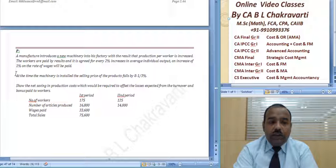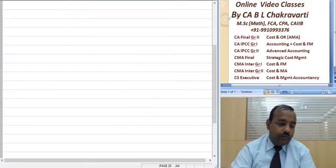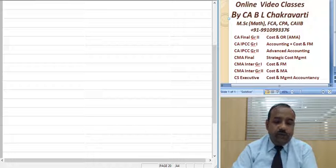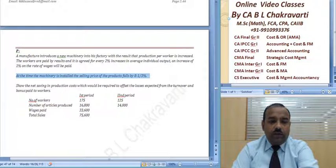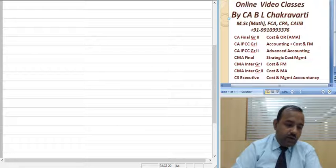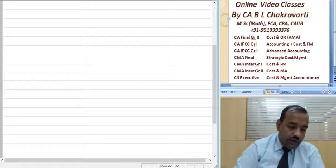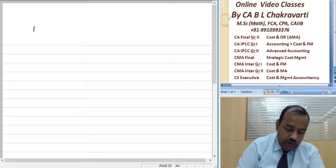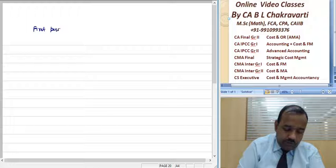When the machine is installed, the selling price has been decreased. This is the first period. Let's do this. We have a first period of production. First period, number of units is 16,800.